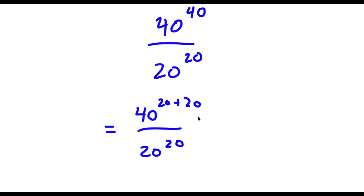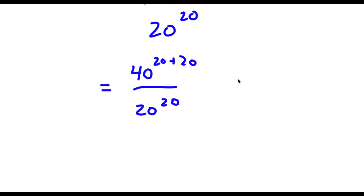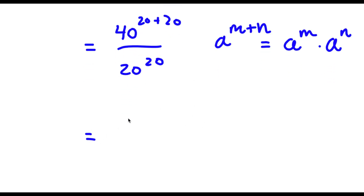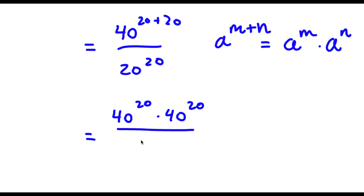So now, if I have something in the form a to the power of m plus n, this is equal to a to the power of m times a to the power of n. So in this case, 40 to the power of 20 plus 20, I can rewrite as 40 to the power of 20 times 40 to the power of 20. And now I have this over 20 to the power of 20.